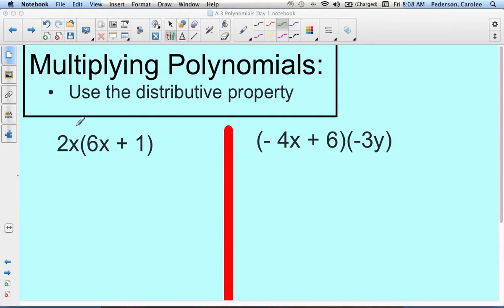We want to distribute this 2x to the 6x first, so 2x times 6x. We multiply the coefficients together, so 2 times 6 is 12, and then x times x is x squared.